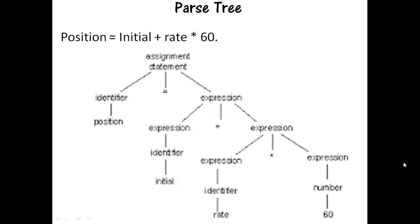Now we apply the rules. By rule 1, identifiers are expressions, so initial and rate are expressions. By rule 2, a number is an expression, so 60 is an expression. By rule 3, expression1 + expression2 is an expression, so initial + rate * 60 is an expression. Finally, position identifier equals the whole expression. Expressions are evaluated according to arithmetic precedence: first *, then +, then =. So rate * 60 is evaluated, then initial + rate * 60, and finally the whole statement position = initial + rate * 60.